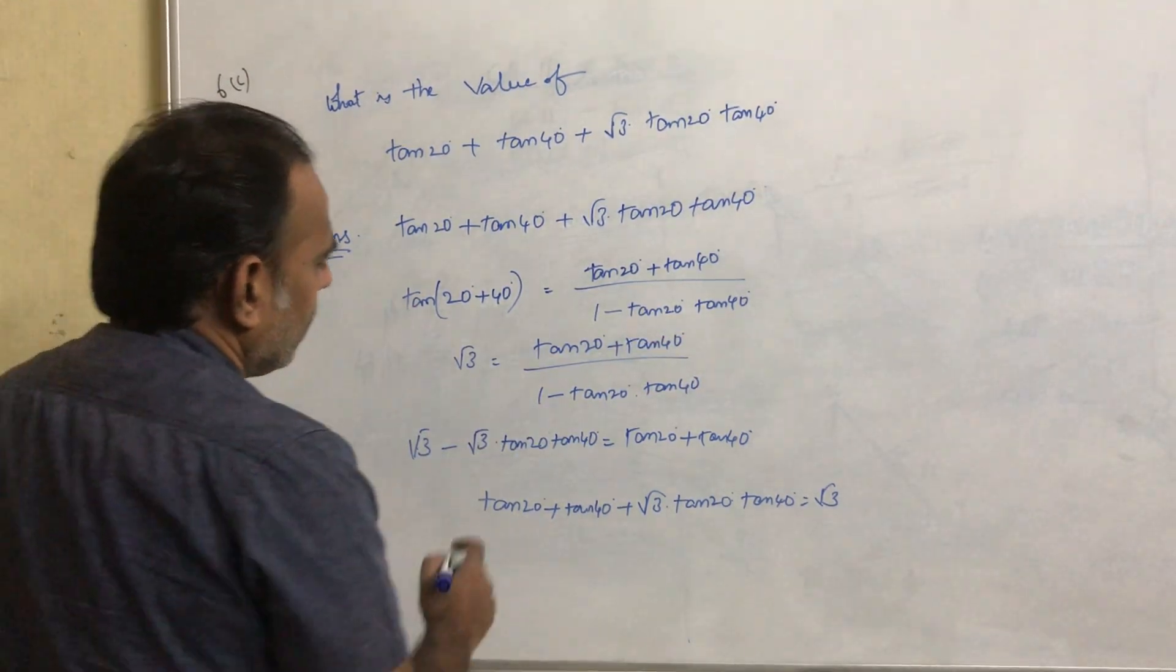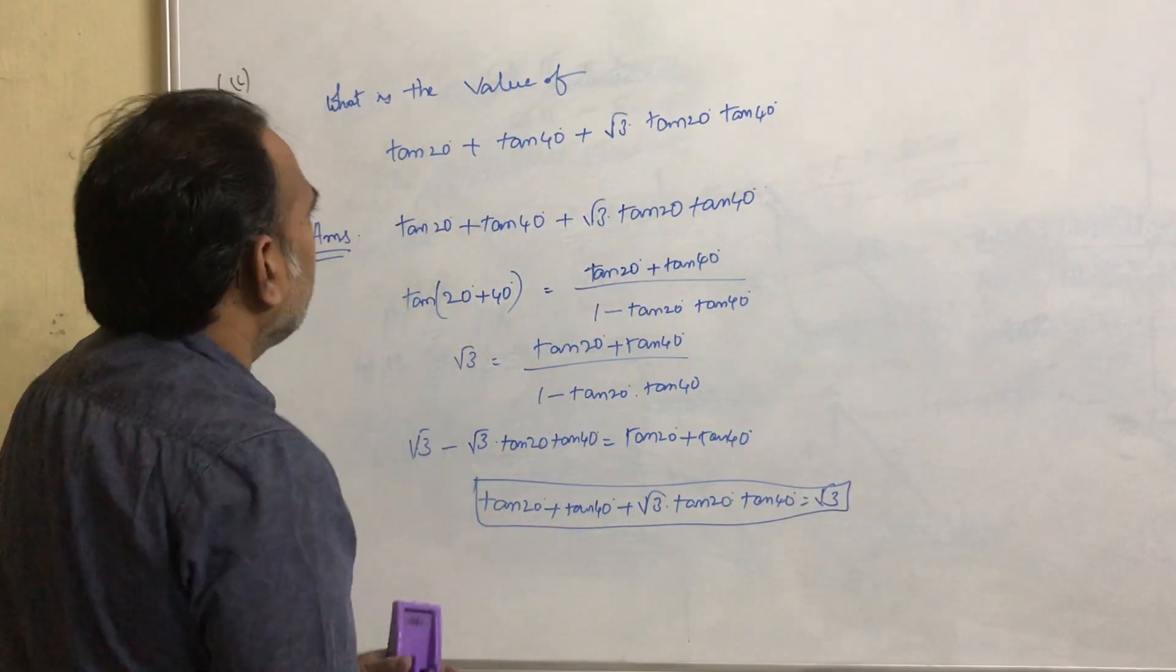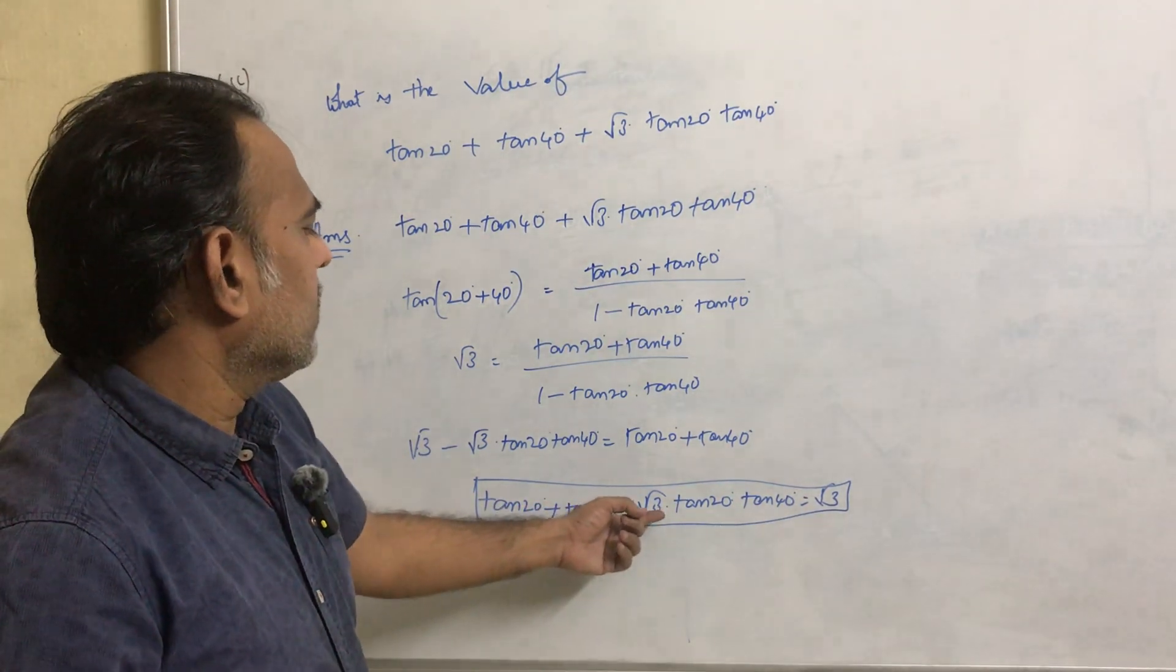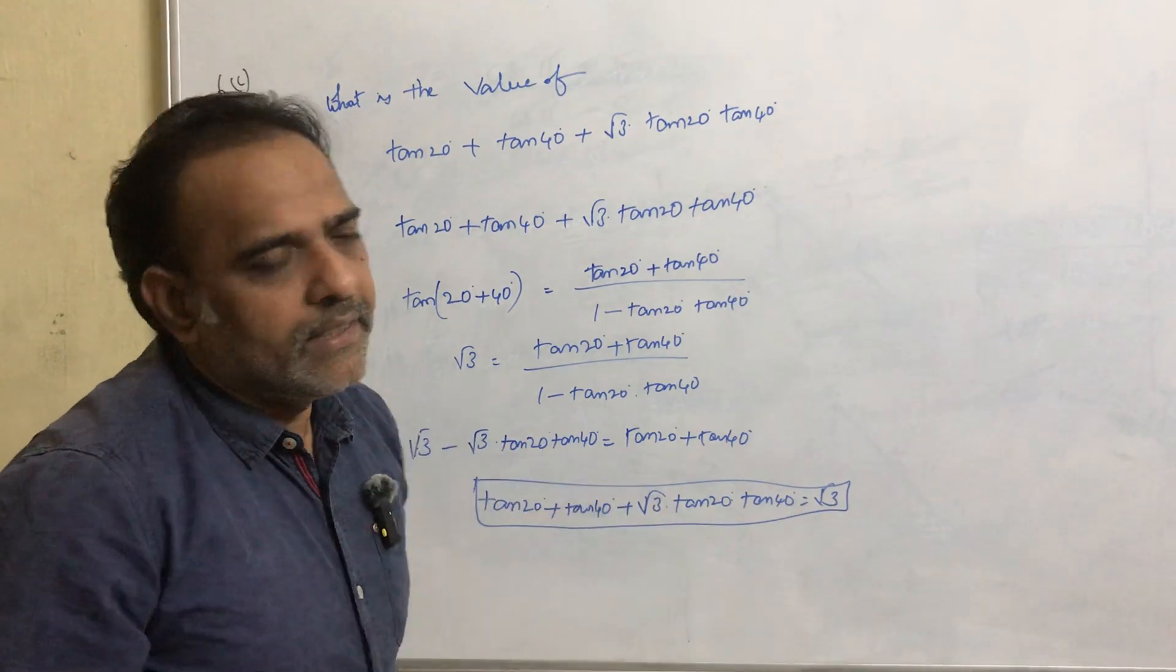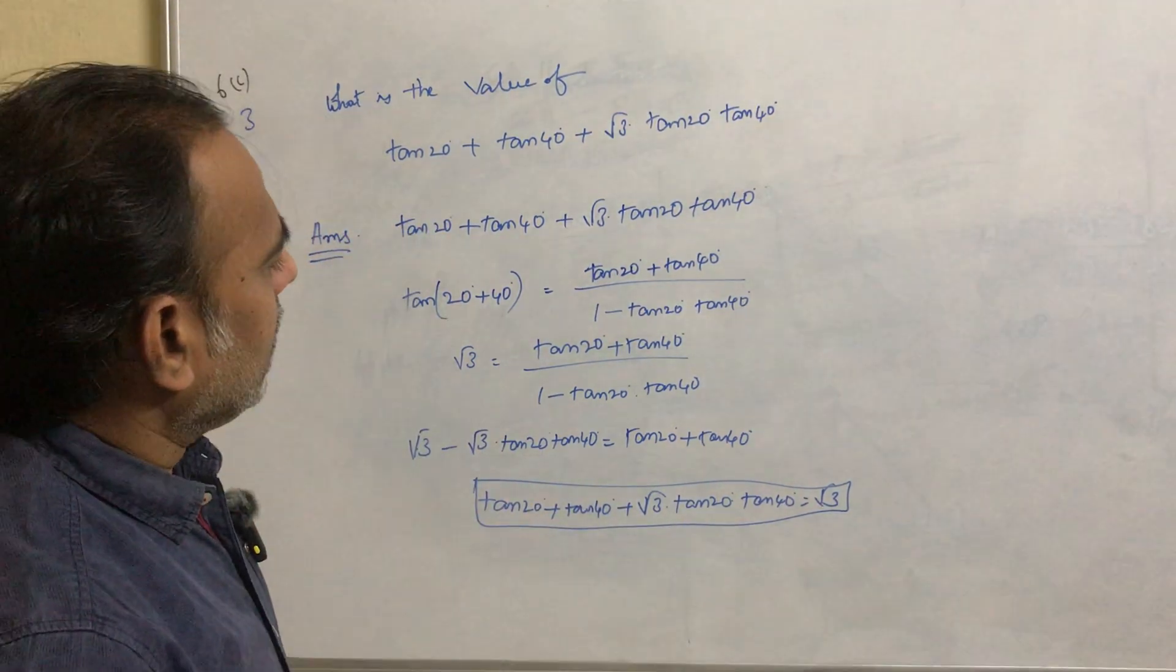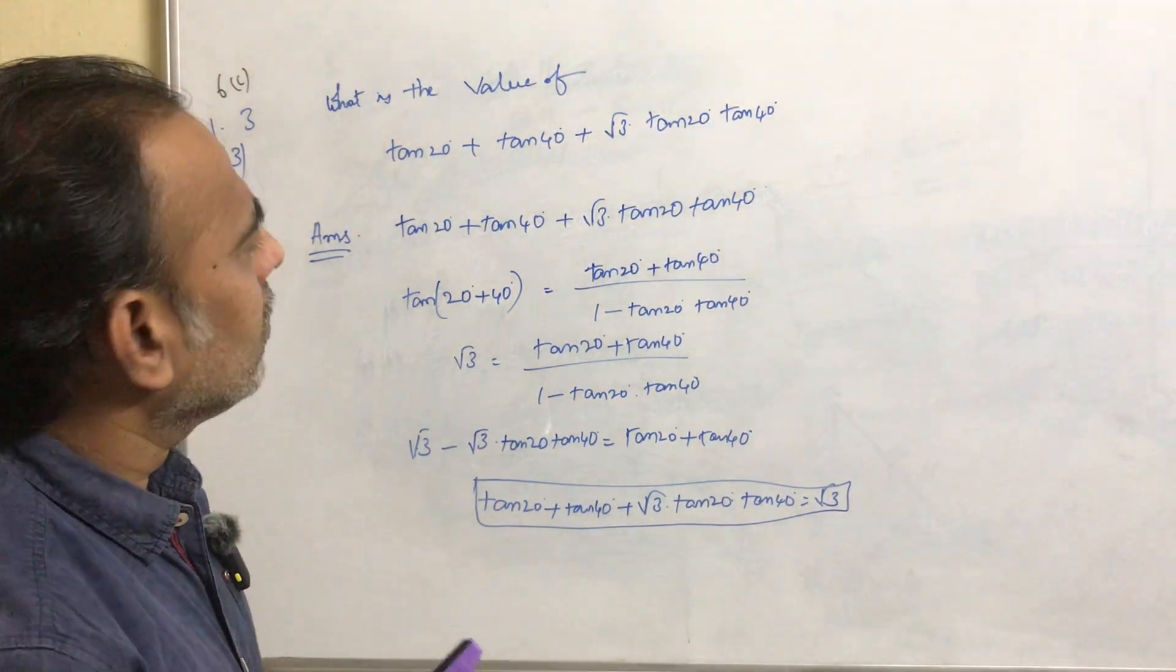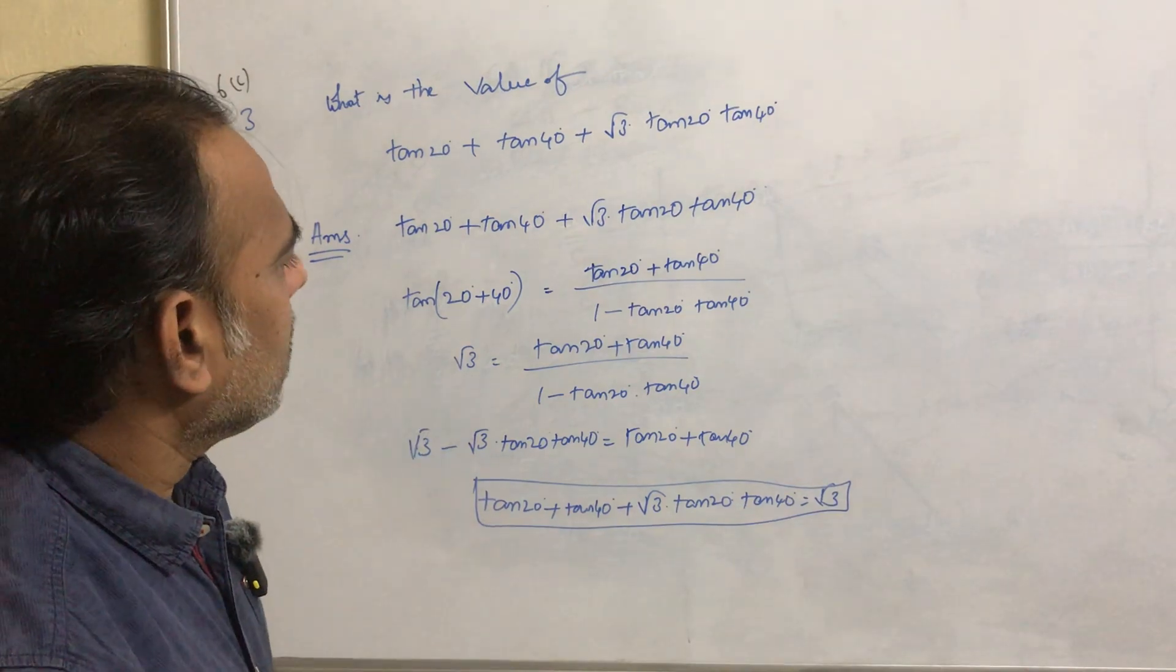Just to simplify this, we will get this. So the value of tan 20° plus tan 40° plus root 3 into tan 20° tan 40° is root 3. Just note it down. If you have any questions, just ask me. Otherwise note it down. If you got any doubts in future, write in the comment section.